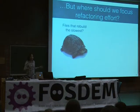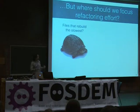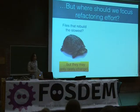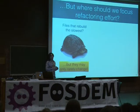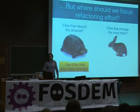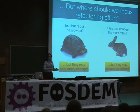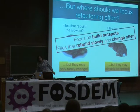The question is: refactoring can help, but in a real system made up of thousands or tens of thousands of files, which files should we focus on to get the most benefit? The first thing that comes to mind is to look at the slowest files to rebuild, but it may be that those files rarely change. Maybe we should look at the files that change the most often, but it may be that those files are already optimal. So in this work, we argue that you should really focus on what we call build hotspots — the files that not only rebuild slowly, but also change often.